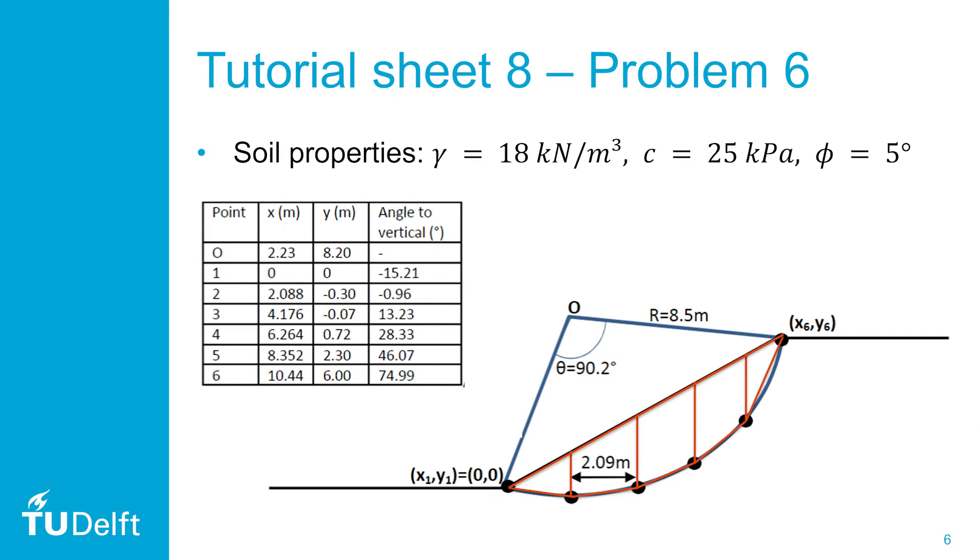The given problem, taken from tutorial sheet 8, is as shown. The given parameters will be explained later on. We can approximate the arc-shaped sliding plane by drawing straight lines from point to point. The geometry of the sections is given in the table as the x and y location of the points and the angle with respect to the vertical. With this knowledge, you know the width of each slice, which is equal to 2.9 meters.